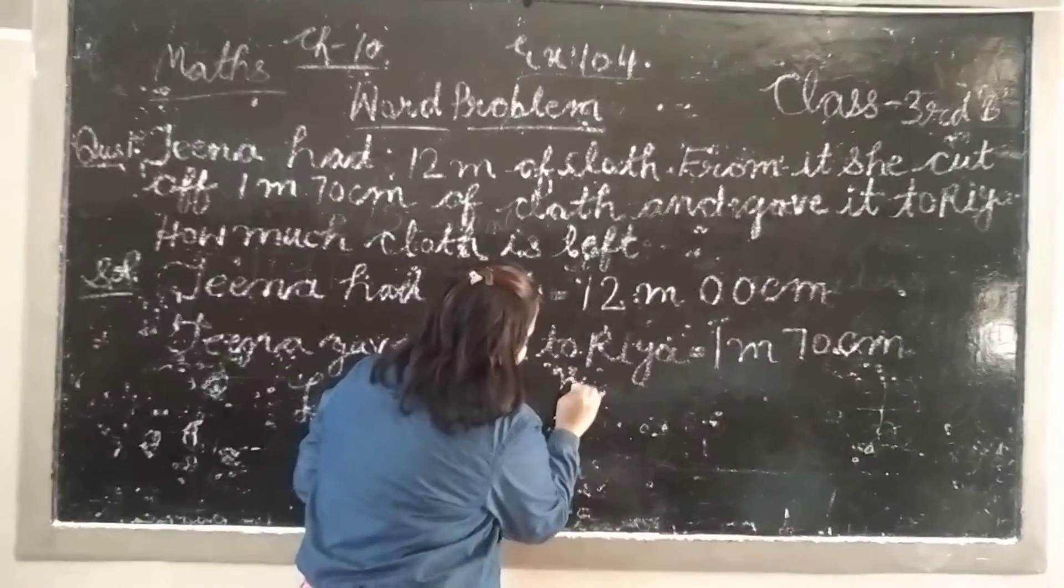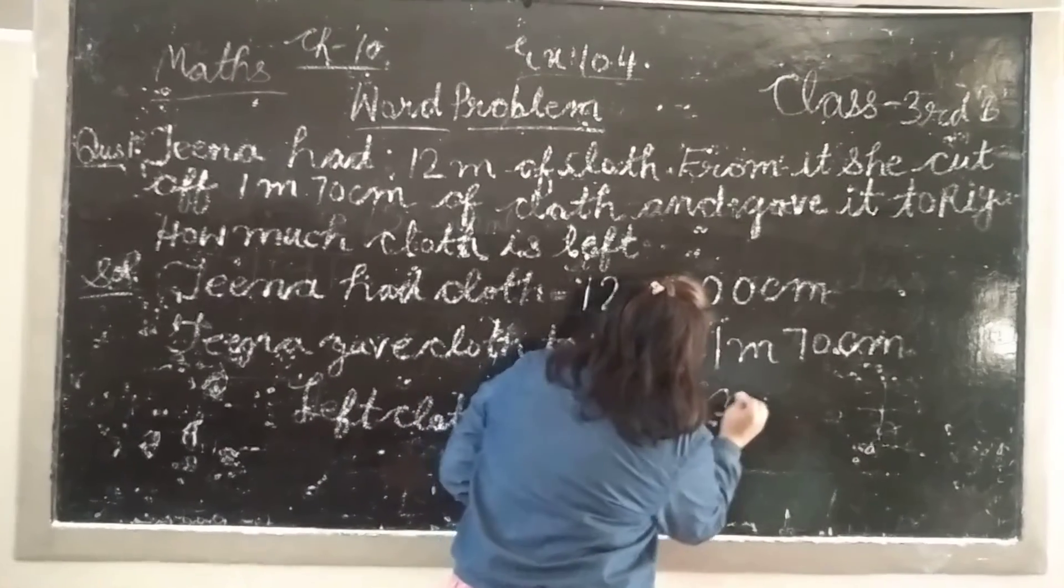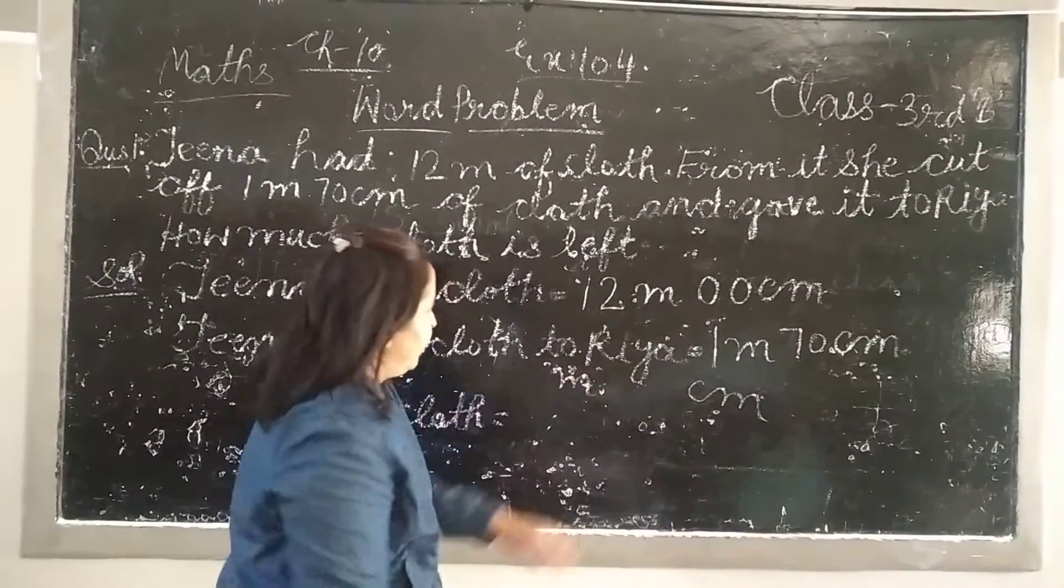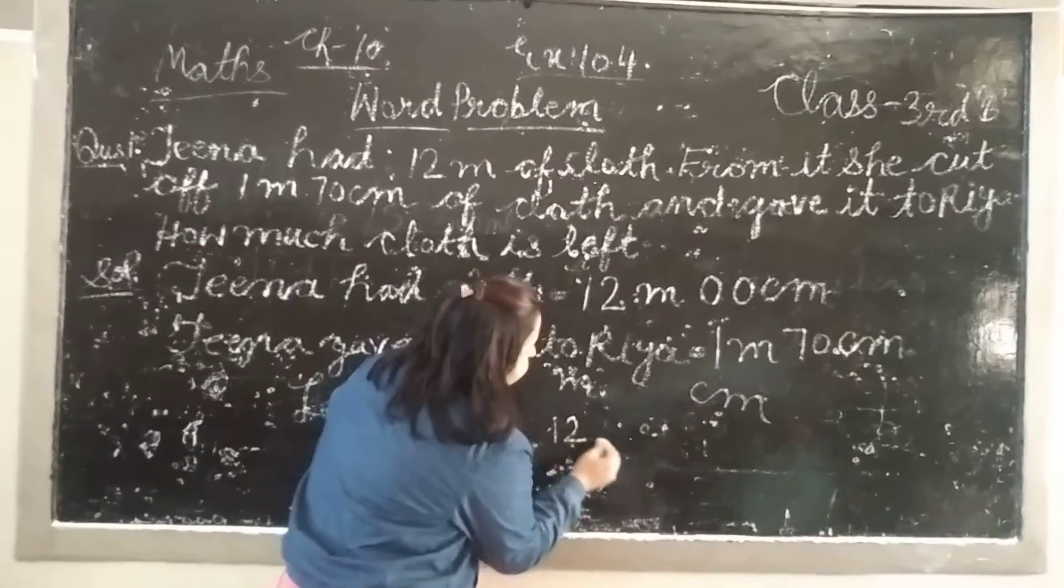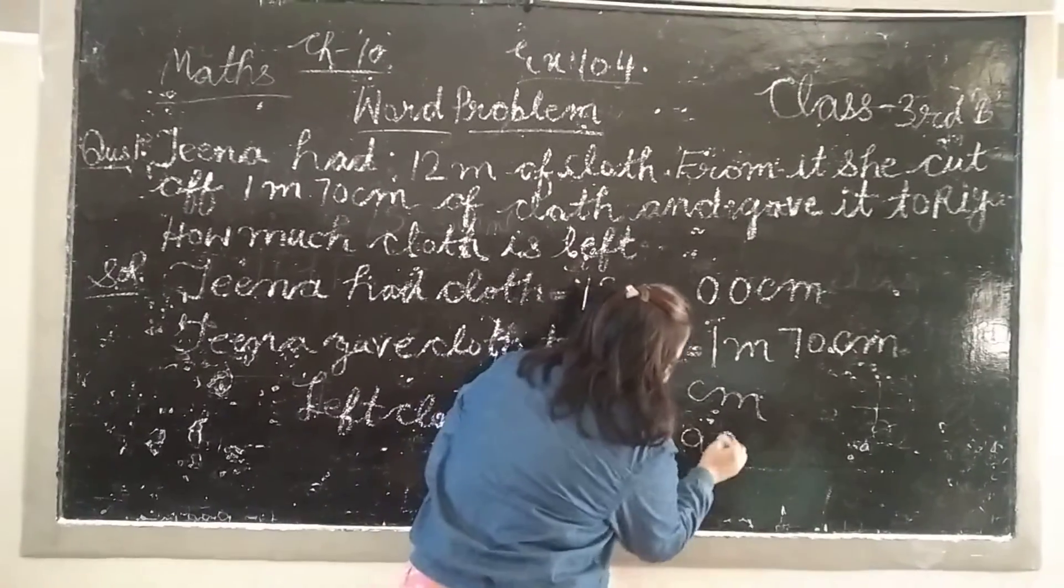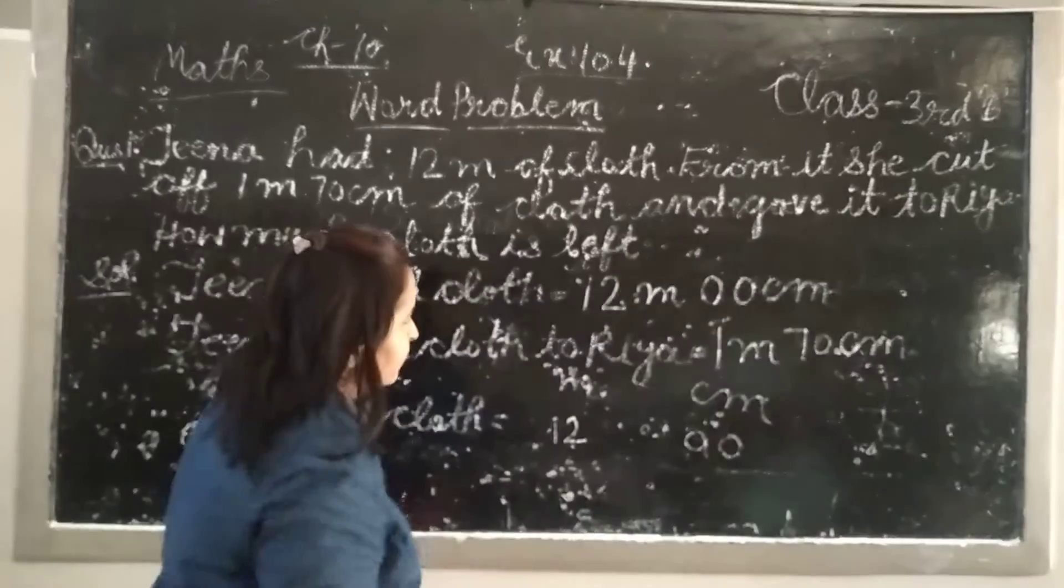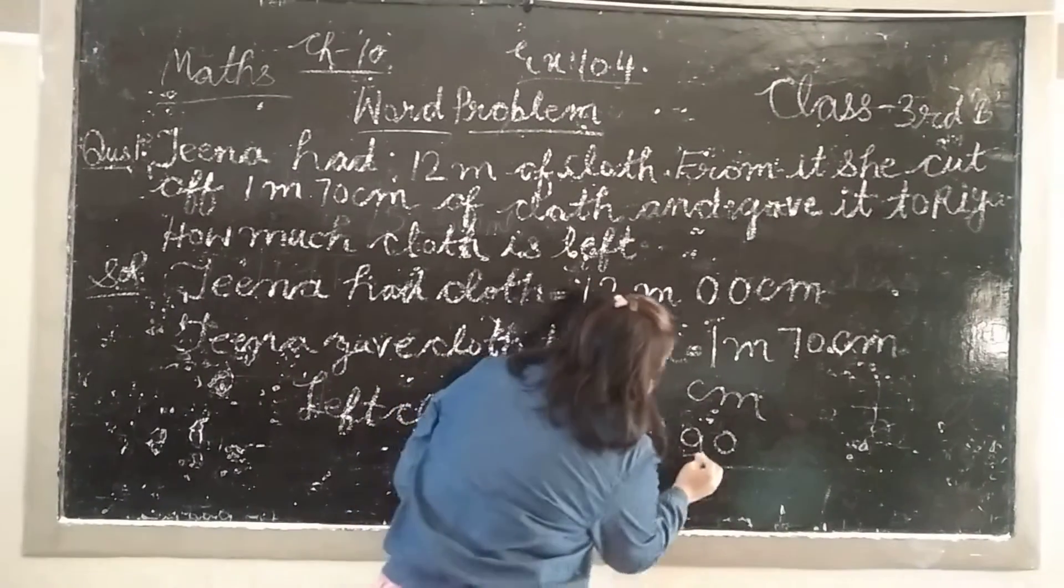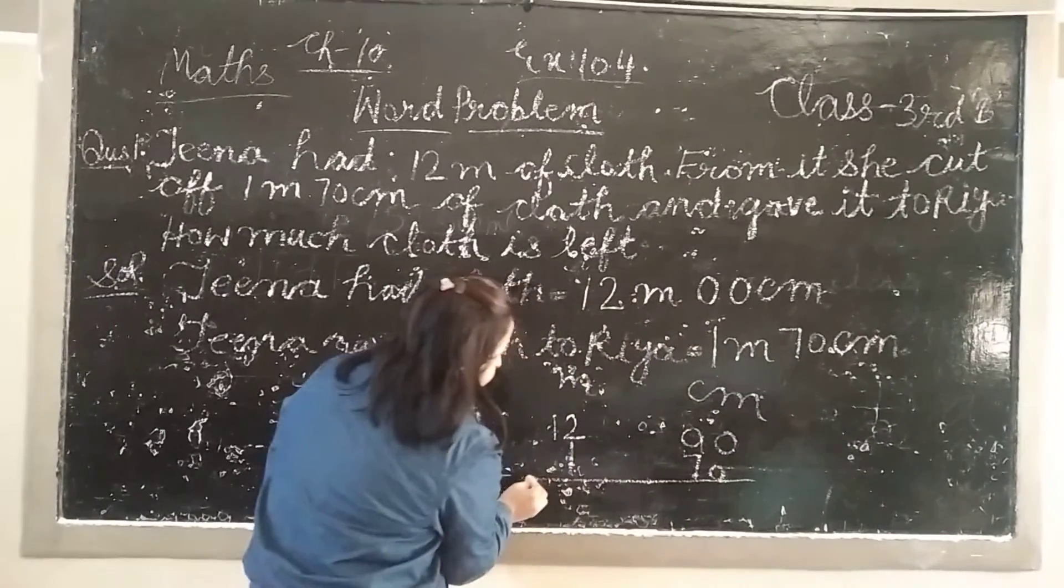Now we are going to subtract the meters and we are going to subtract 70 centimeters. We are going to write zeros. Okay? We're going to subtract 70 cm. Okay?